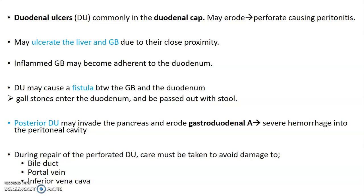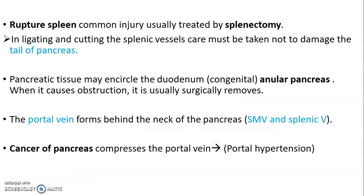Duodenal ulcers commonly occur at the duodenal cap. Anterior duodenal ulcers may perforate, leading to peritonitis, and may ulcerate into the liver and gallbladder due to close proximity. They may also cause a fistula — an epithelial-lined communication between two surfaces — such as between the gallbladder and the duodenum, allowing gallstones to enter the duodenum. Posterior duodenal ulcers may invade the pancreas and erode the gastroduodenal artery, leading to severe haemorrhage into the peritoneal cavity. During repair of a perforated duodenal ulcer, you must be careful because the bile duct, portal vein, and inferior vena cava are in close proximity to the different parts of the duodenum.